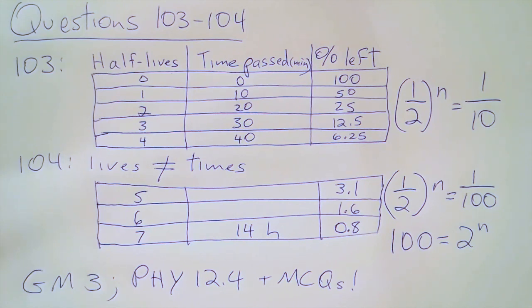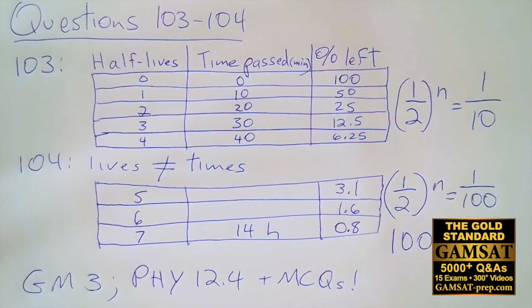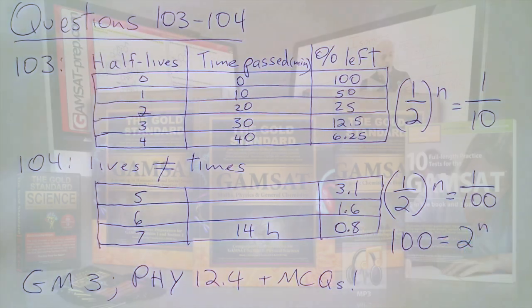So we know it's between 6 and 7, but closer to 7. We divide the 14 hours by 7 and get 2 hours. None of the other answers are even close, so for 104 the answer is B. If you're struggling with math, look at GAMSAT Math Chapter 3 and half-lives Physics 12.4, especially the chapter review questions and the questions in the HEAPS book.